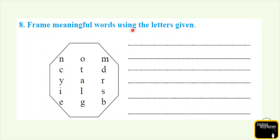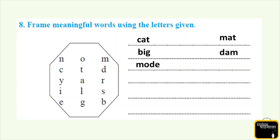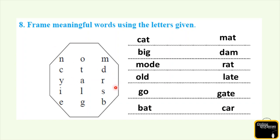Question number 8: frame meaningful words using the letters given. Now we can see some letters and we are going to make some words from them. First word: C-A-T - cat. Next: M-A-T - mat. B-I-G - big. D-A-M - dam. R-A-T - rat. O-L-D - old. L-A-T-E - late. G-O - go. G-A-T-E - gate. B-A-T - bat. Last word: C-A-R - car. All these words are made using those letters.